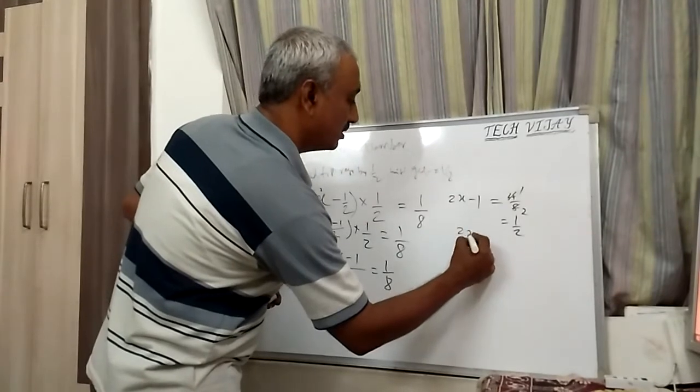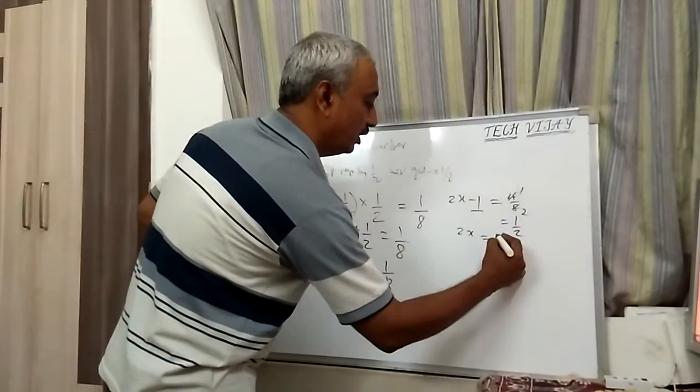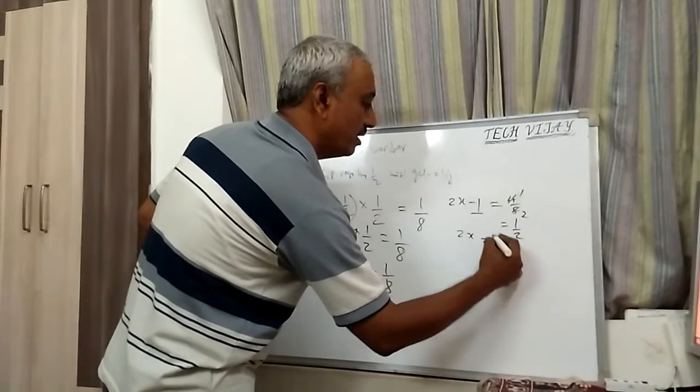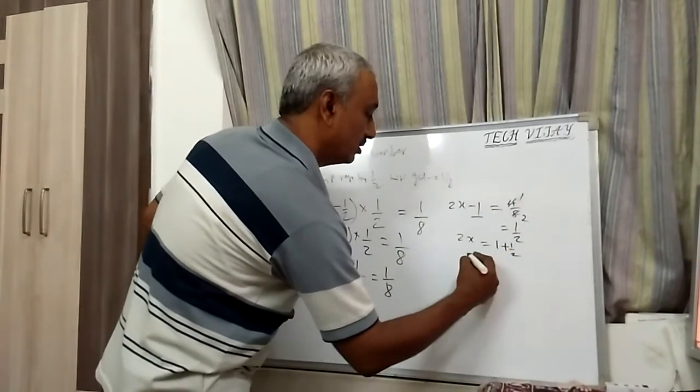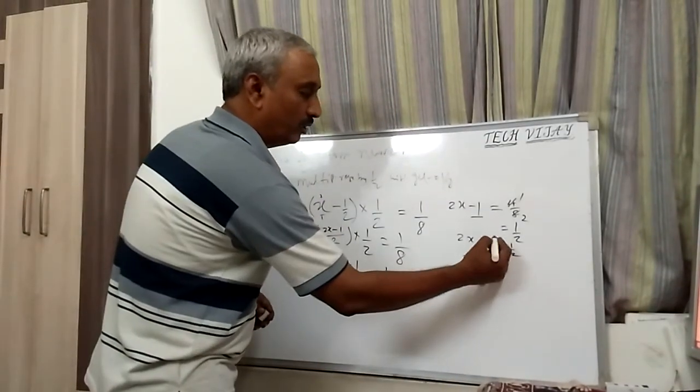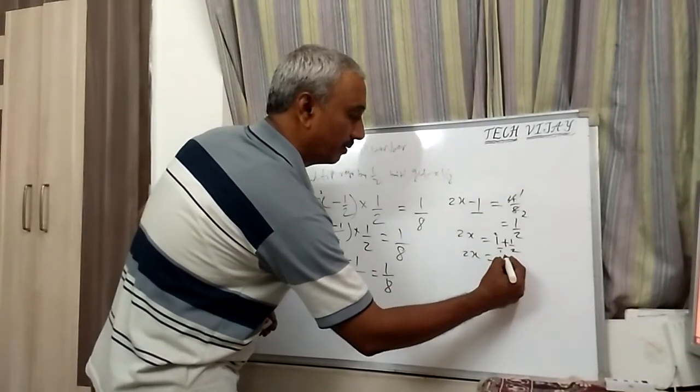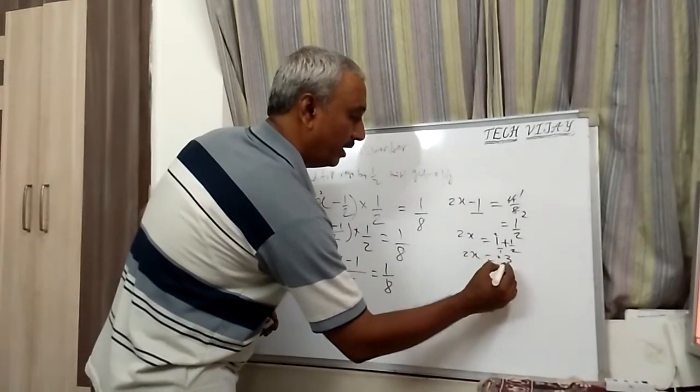So then 2x is equal to, this minus 1 will go to right hand side and become plus. So 1 plus 1/2. So 2x is equal to, again we can take LCM. 1 into 2, 2 into 1, 2. 2 plus 1 is 3.